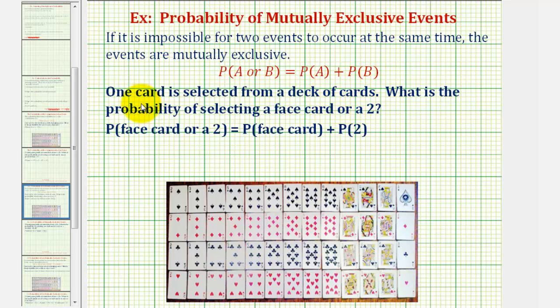For our first example, one card is selected from a deck of cards. What is the probability of selecting a face card or a two?